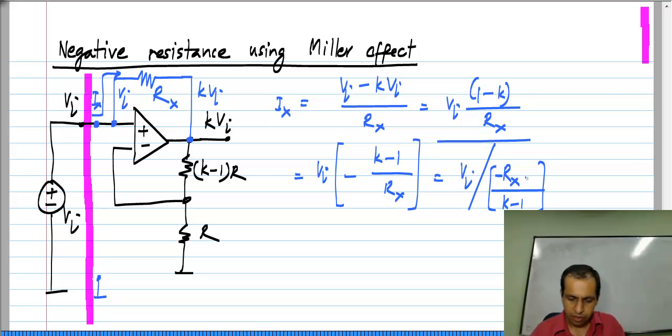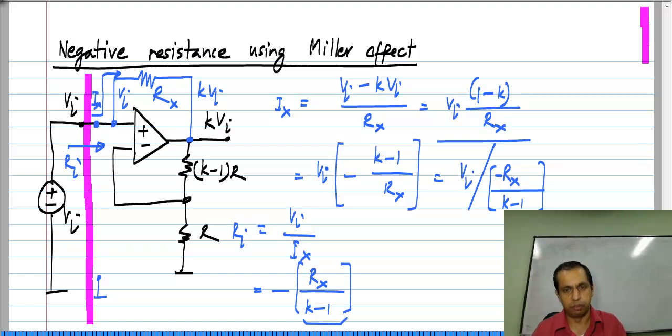The resistance looking in here R i, which is V i by i x, is nothing but minus R x divided by K minus 1. K minus 1 is a positive number and R x is of course positive, it is a physical resistor. So the input resistance of this circuit is negative. If you wanted to synthesize a negative resistance, this is how you would do it.